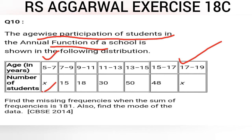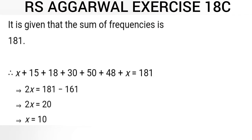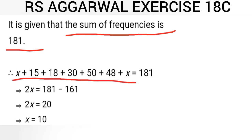We have to find out the value of mode. As you can see, the sum of frequencies is given as 181. First of all, we will try to find out the value of the missing frequency. It is given that the sum of frequencies is 181, so when we add all these frequencies we will get 181.